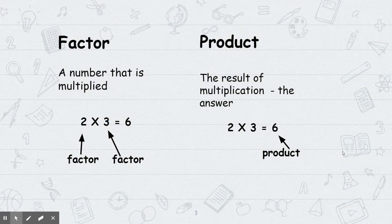You're going to come across the word factor. That's the number that is being multiplied. So in this example, 2 times 3 equals 6. The factors are 2 and 3. You're multiplying those together to get the product, which is the next word.